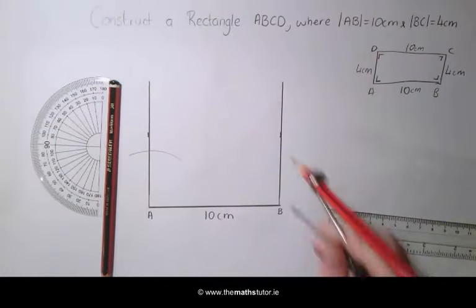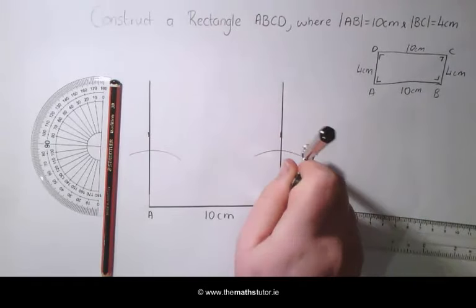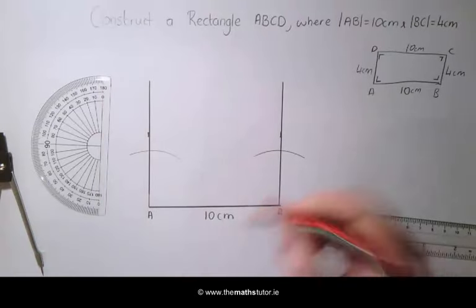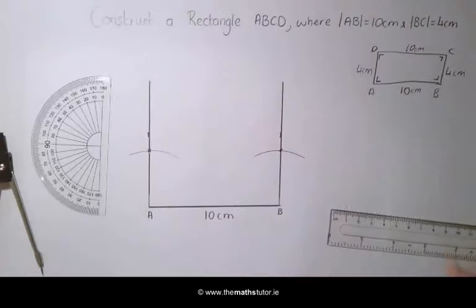This side is also 4cm, so we are going to mark a line across this. Mark these two points of intersection and join them together.